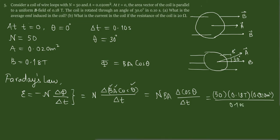And then we have this delta cosine theta. So delta cosine theta is cosine final is 30 degrees minus cosine initial is 0 degrees.